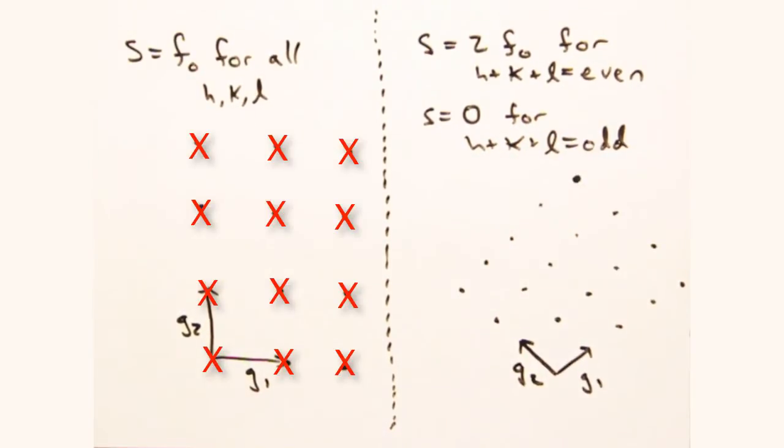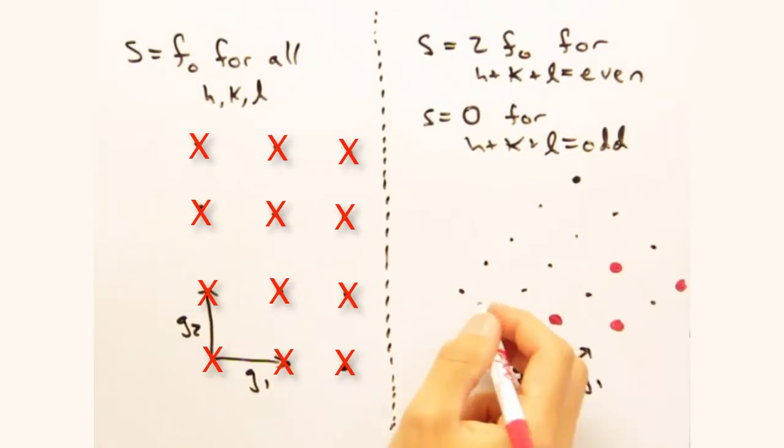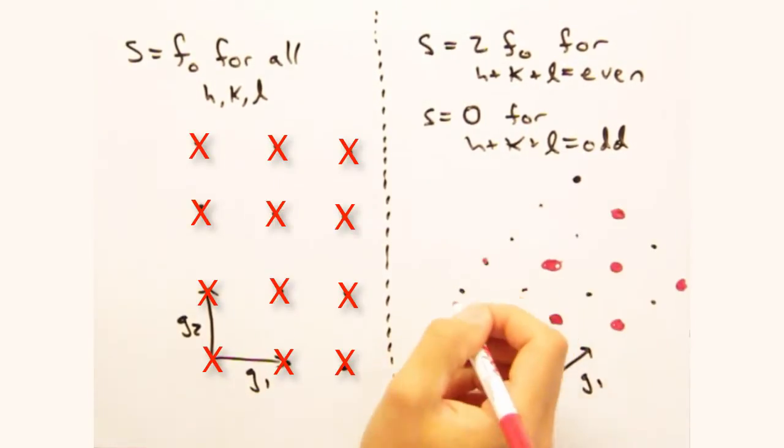But for the centered square cell, we now have a two-atom basis. Assuming all the atoms are the same, the structure factor for this case is 2f0 for h plus k is an even integer and 0 for h plus k being an odd integer.